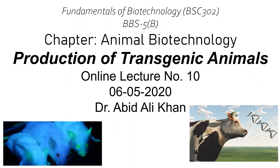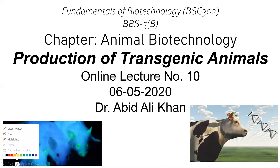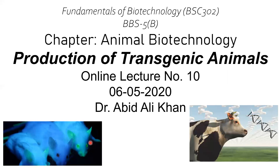Moving forward in animal biotechnology, today we are going to discuss transgenic animals and how we can produce them. For example, you can see in this image a mouse with glowing green eyes, in which a green fluorescent protein has been cloned into its eyes. You can also see a super strong cow where DNA has been inserted.